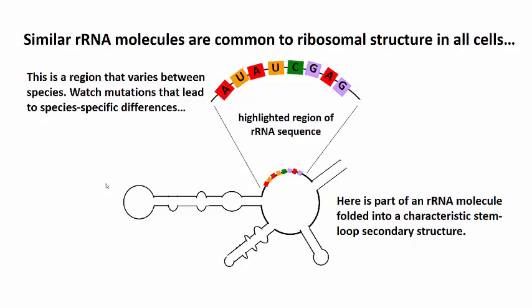In this example, ribosomal RNAs that are part of the structure of the small ribosomal subunit in different species were compared. We can see a few base substitutions found in different species in the highlighted part of the sequence.